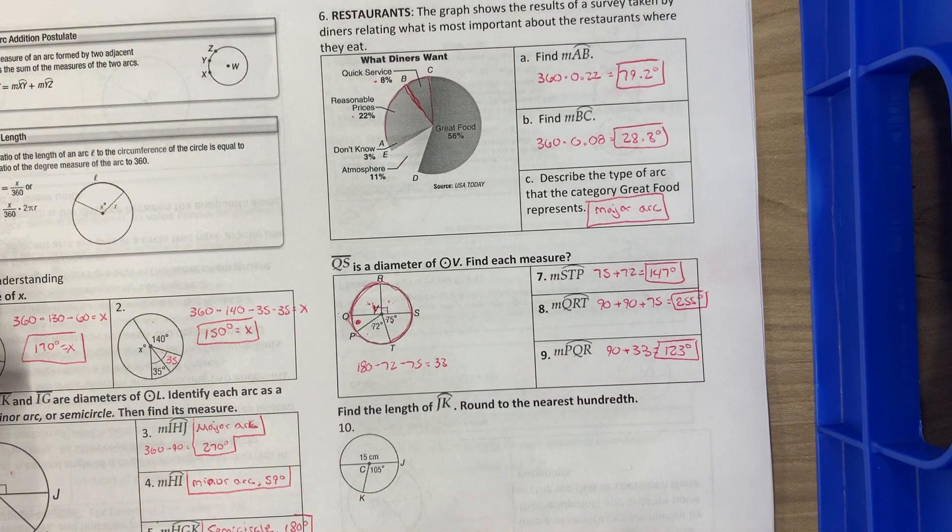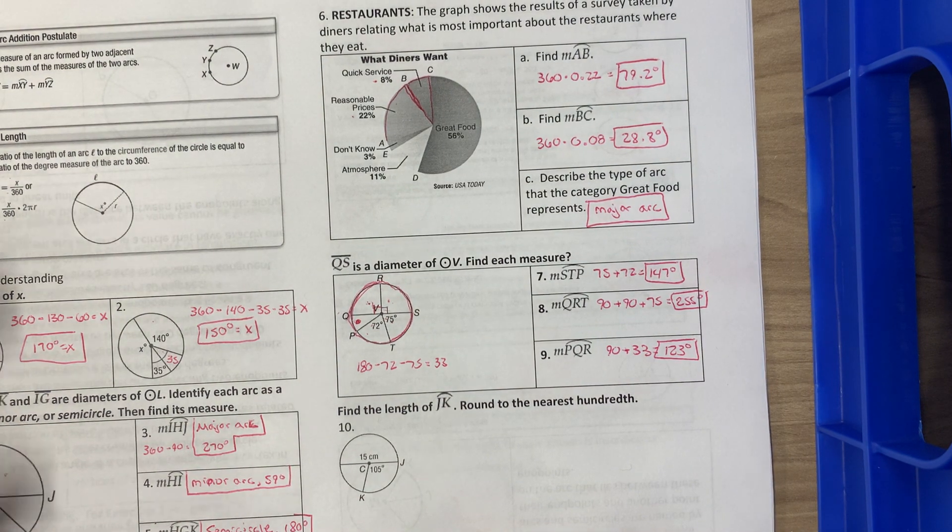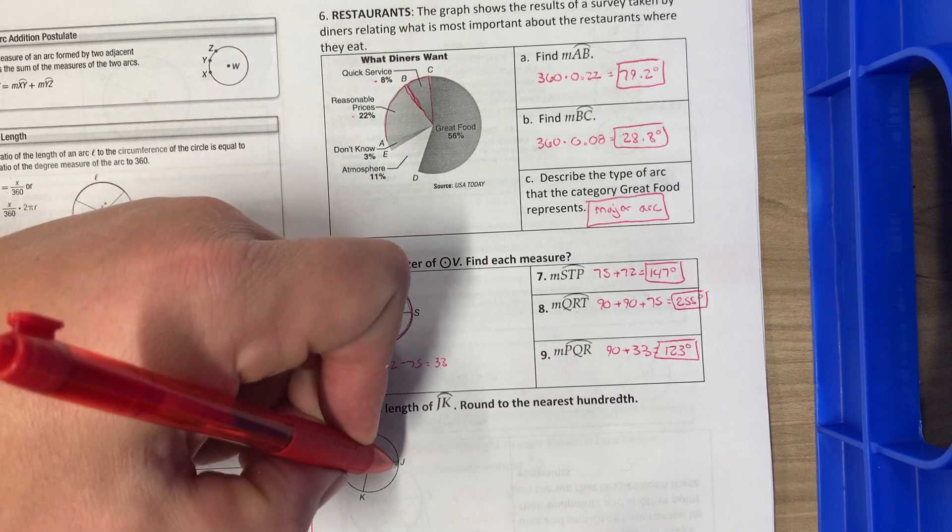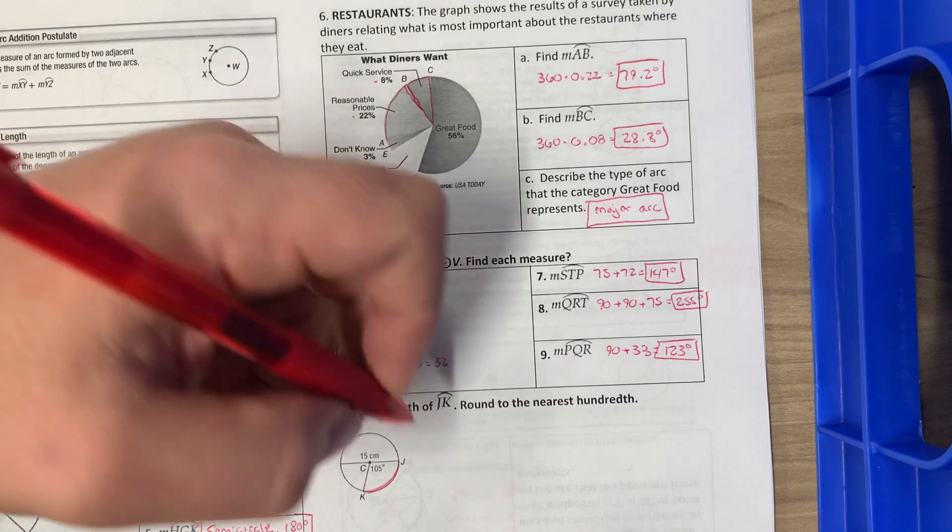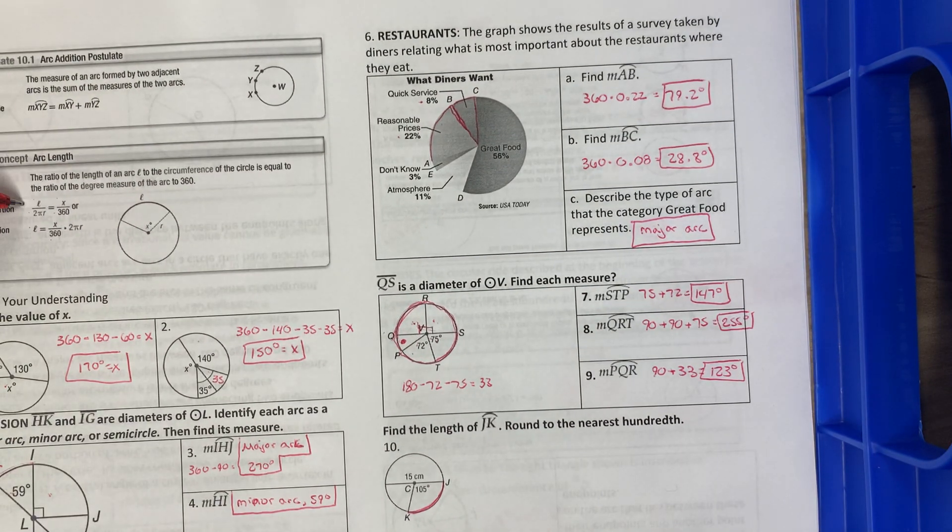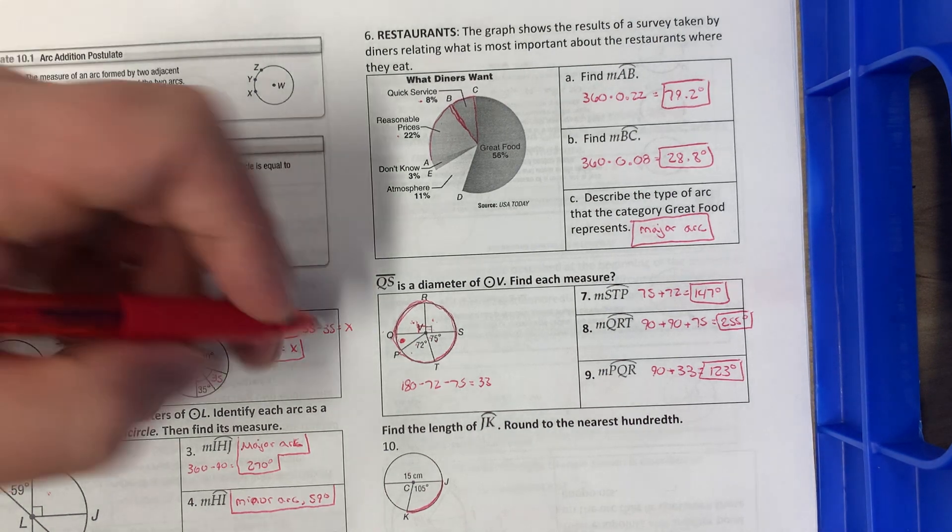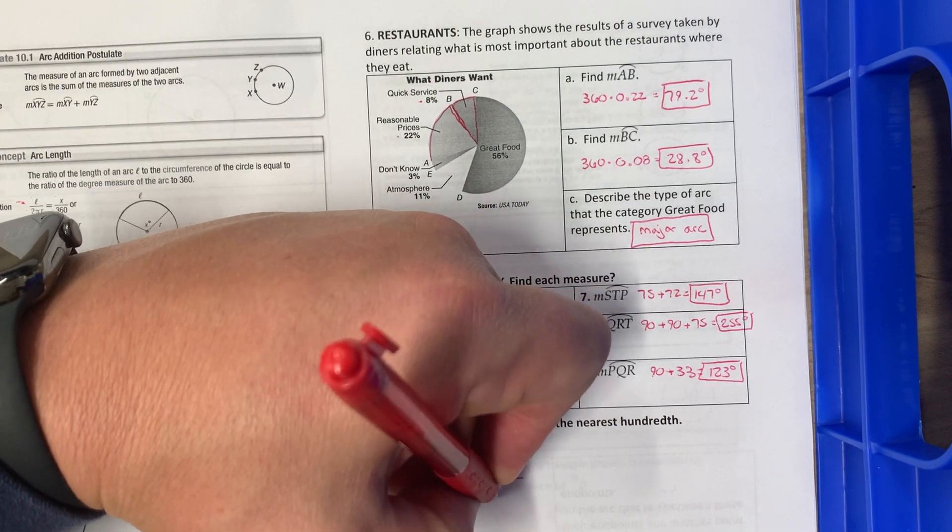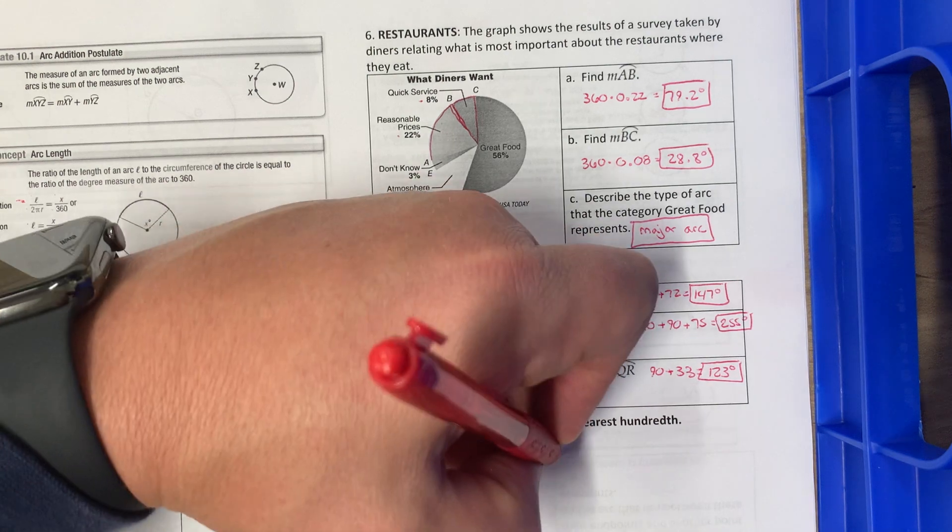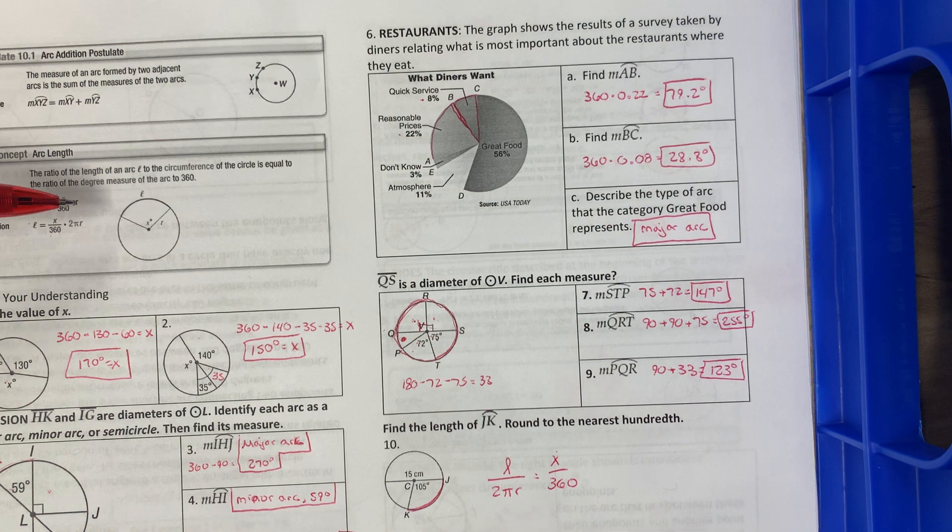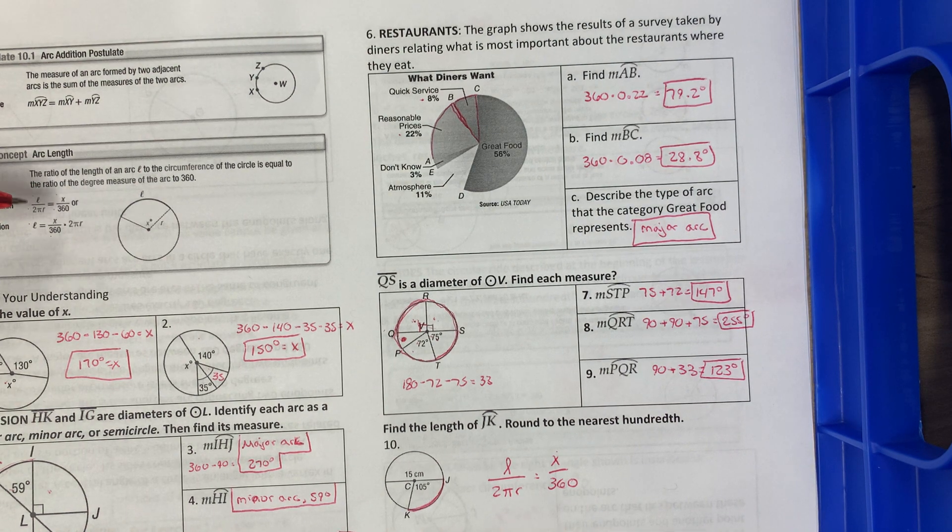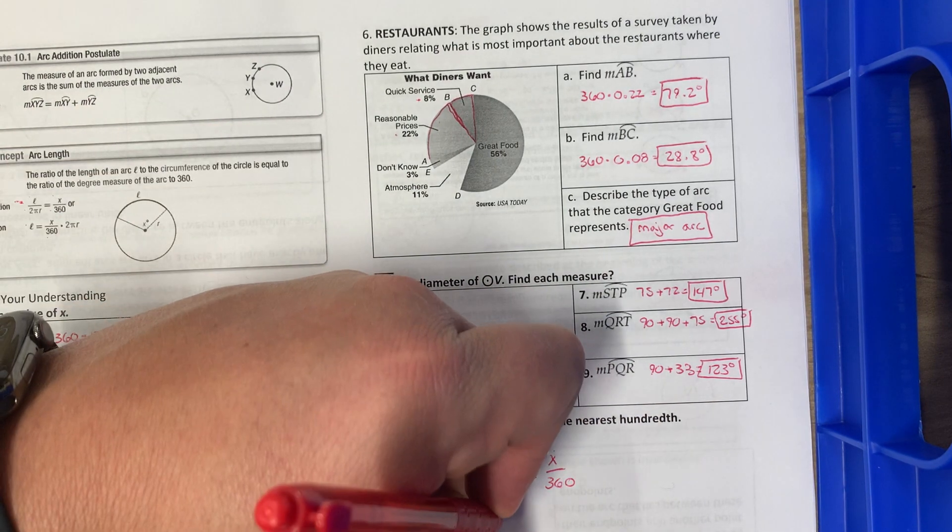And then find the length of JK round to the nearest hundredth. So finding JK, we're trying to find this guy right here. So we're using our formula from up here, our arc length. The L over 2πR equals X over 360. R is a radius, so our radius is going to be on this one 7.5 because half of 15.